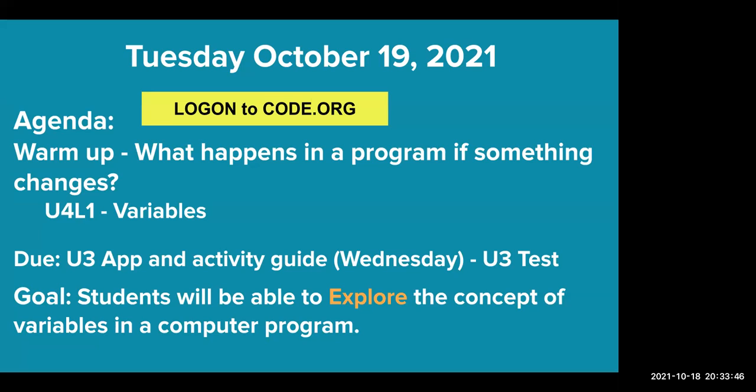We're going to be looking at Unit 4, Lesson 1, variables. What is due is your Unit 3 app activity guide tomorrow, Wednesday, and the Unit 3 test. If you have not done it yet, you need to get it done. The goal is that students will be able to explore the concept of variables in a computer program.